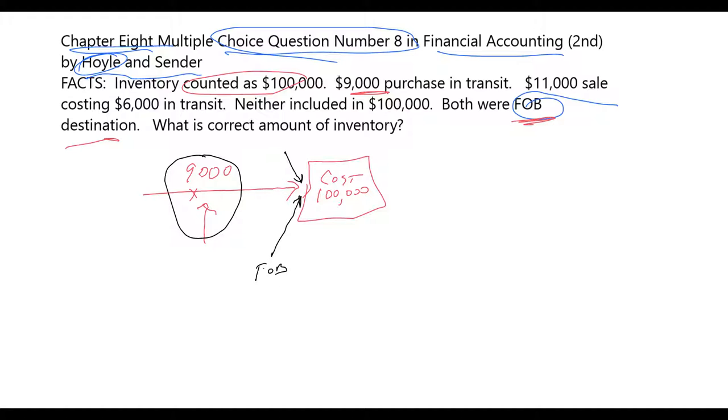Since it's not to the FOB point, since it hasn't gotten to the FOB point, we do not include the $9,000. It should not be part of that $100,000. It should not be included. And we know that because of the FOB point.